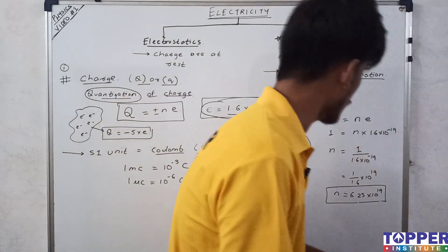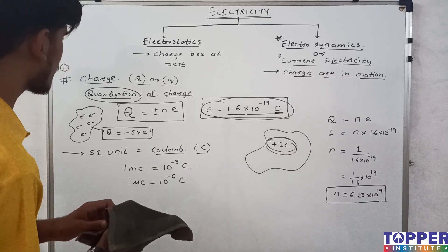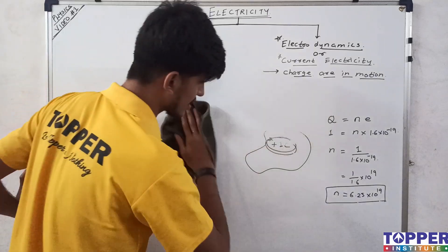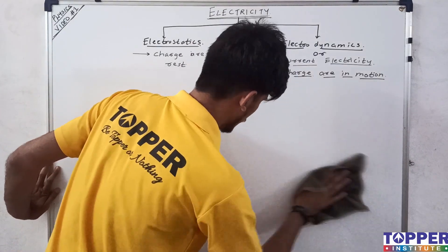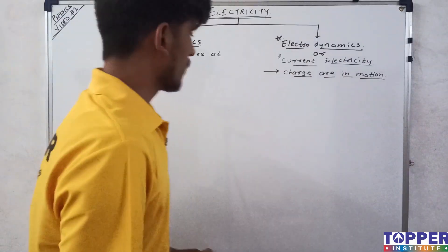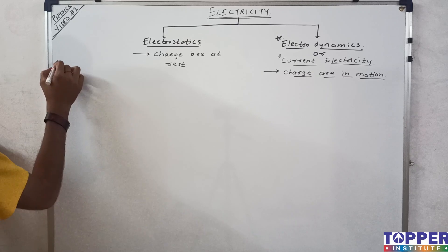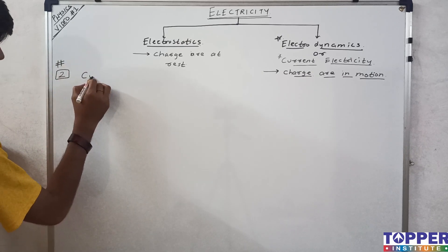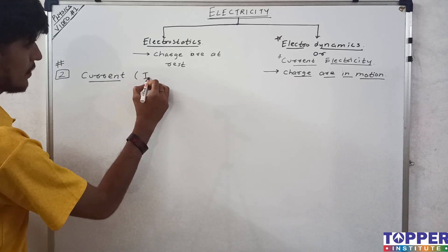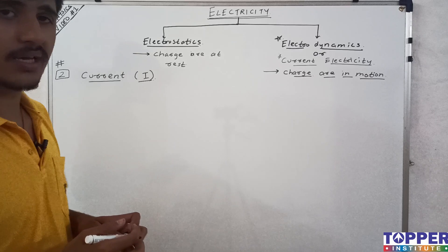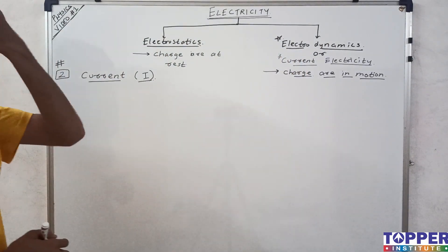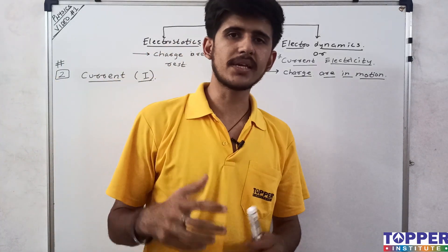Now, if you have understood charge, then you can easily understand what current is. The second very important terminology is current, denoted by capital I.